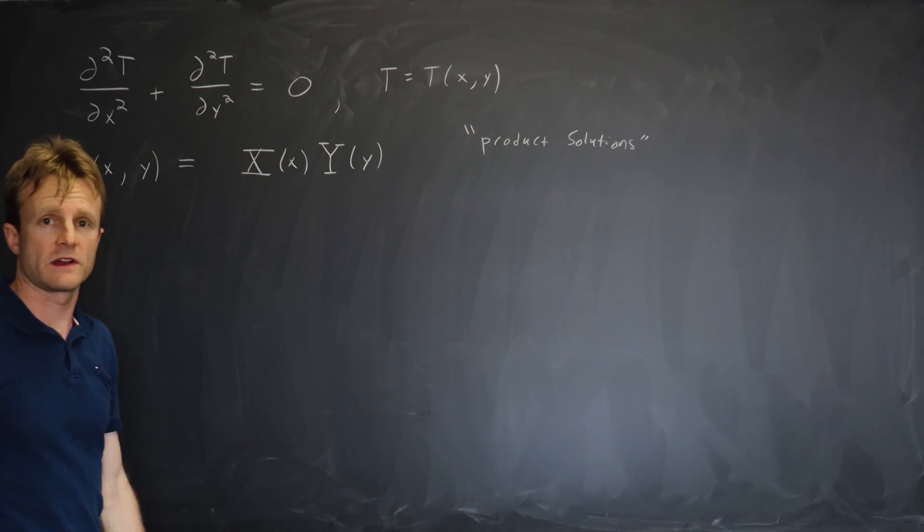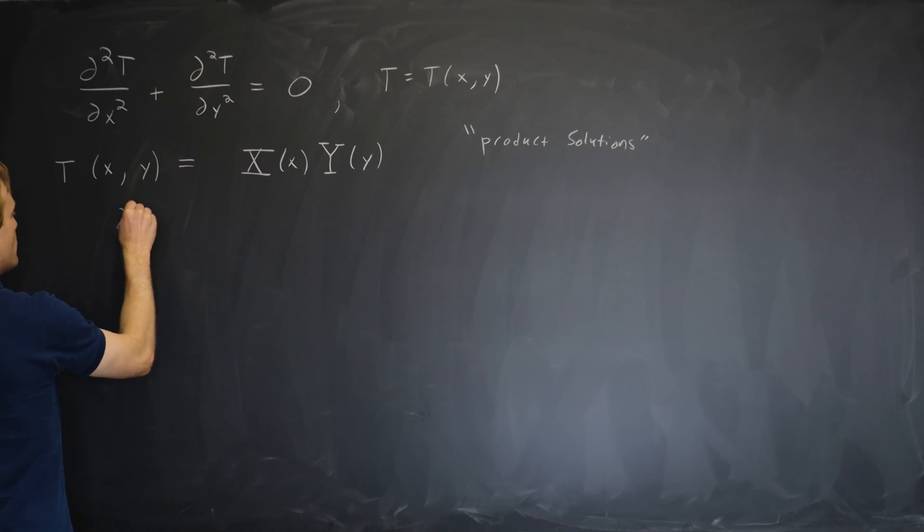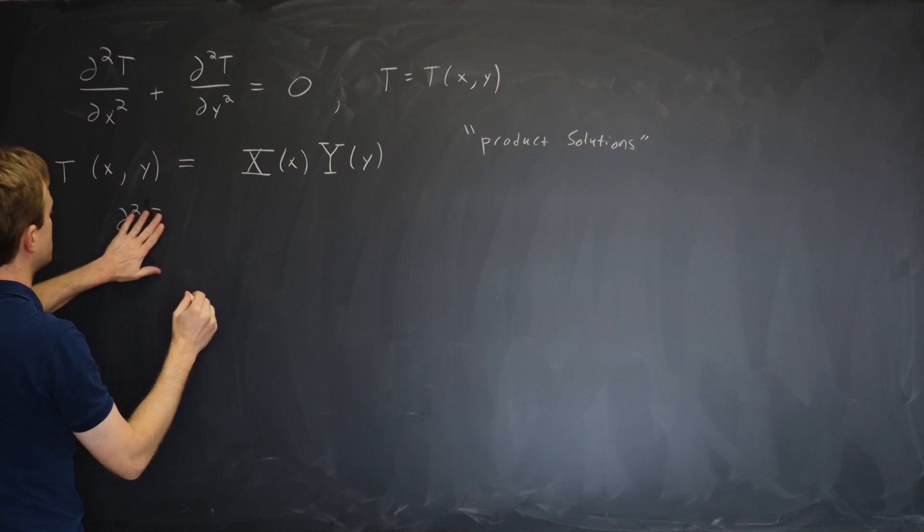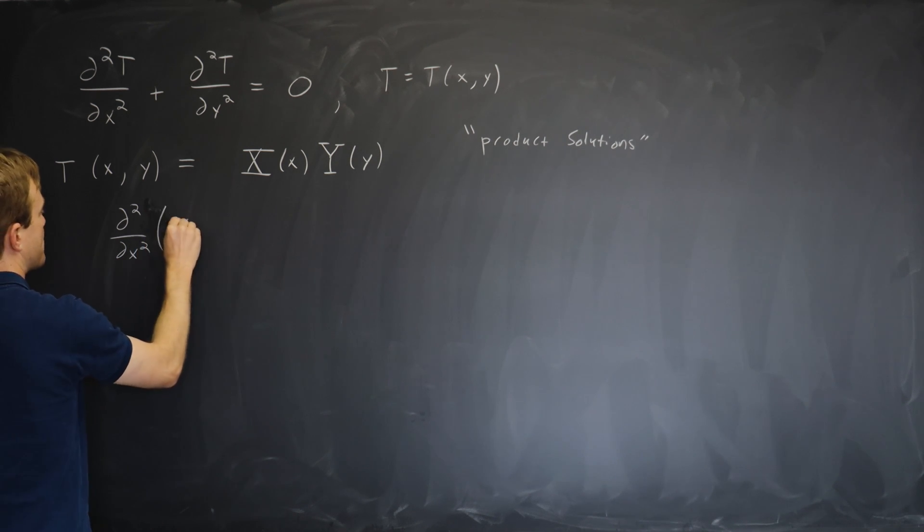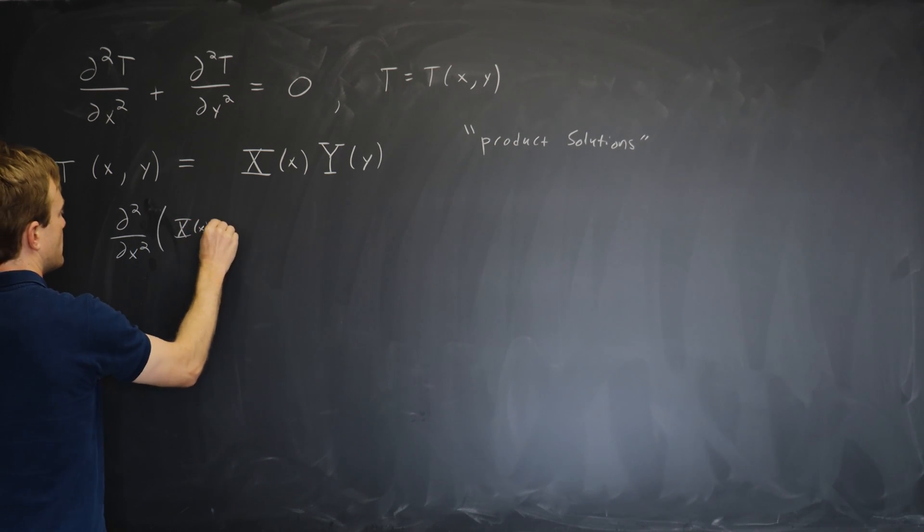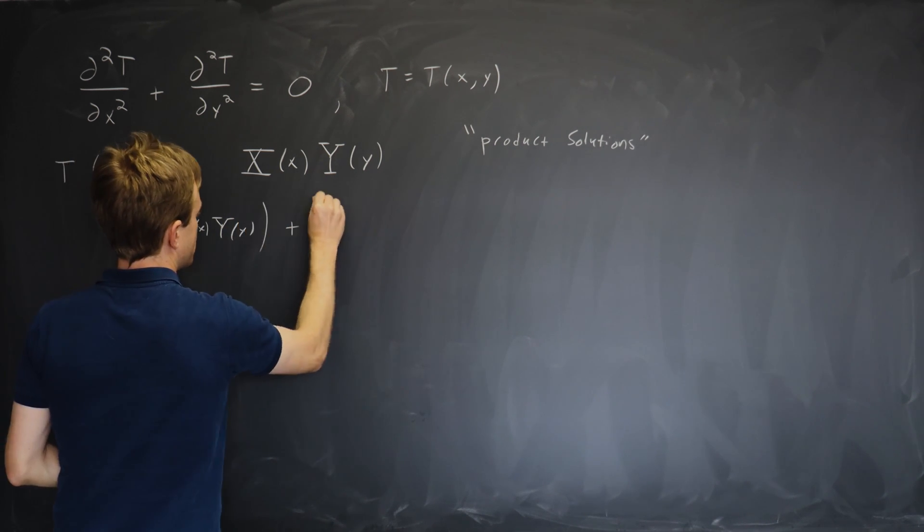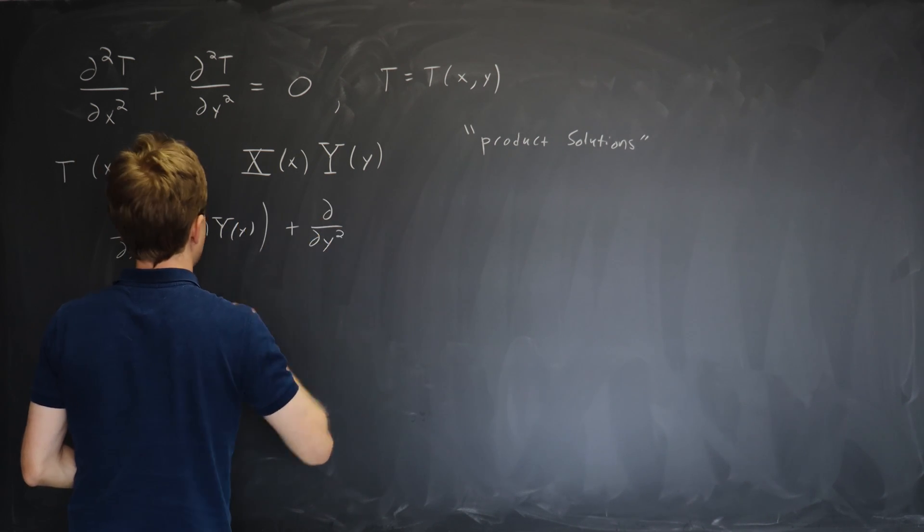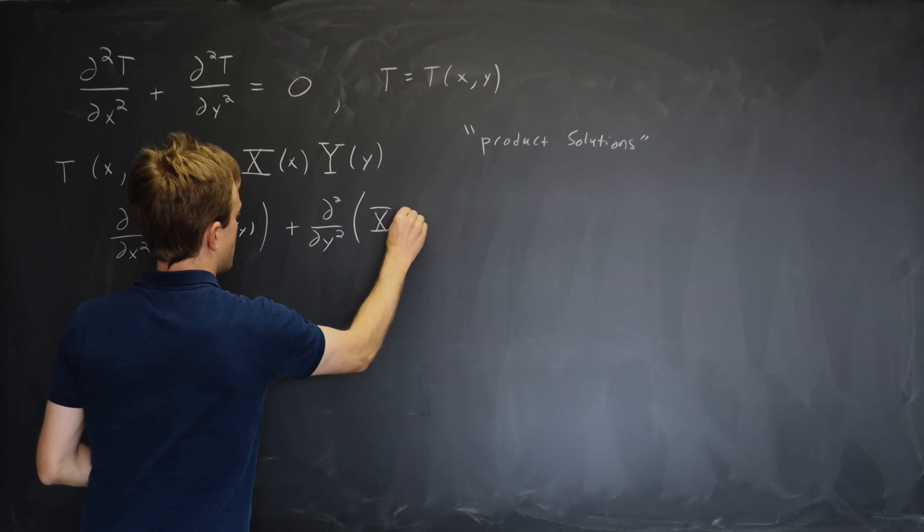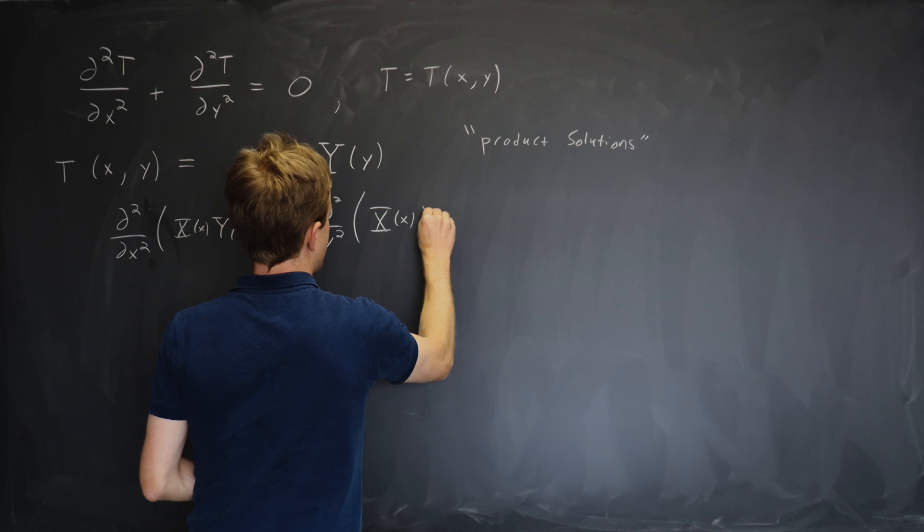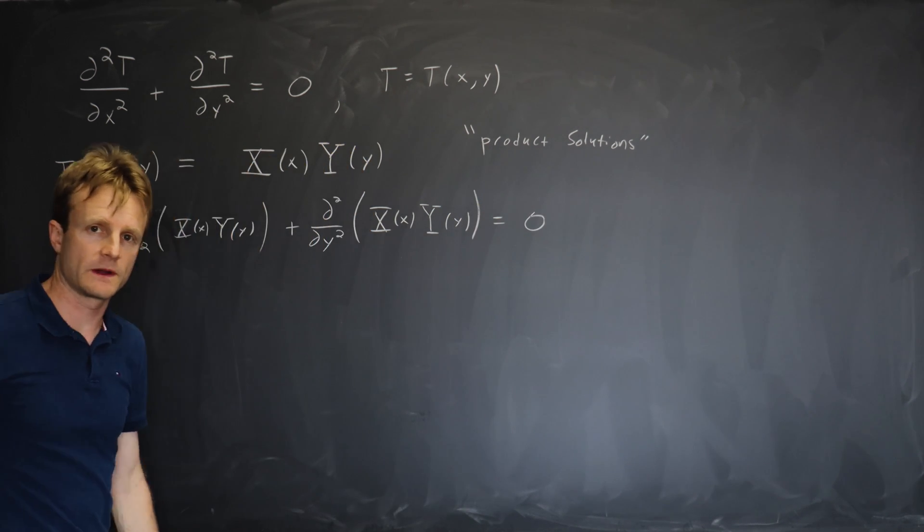You make this ansatz. Let's plug that in. Then we'll find that the second derivative with respect to x squared of capital X times capital Y plus the second derivative with respect to y of capital X times capital Y is equal to 0.